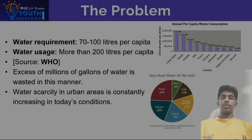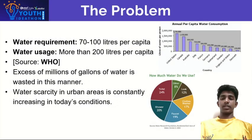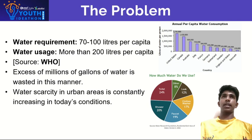The problem statement of this project is that various sources highlighted a notable disparity between the quantity of water utilized by the individual. The water requirement is 70 to 100 liters per capita, but the usage is more than 200 liters per capita, as stated by the WHO. This is how more than 100 million gallons of water is wasted.